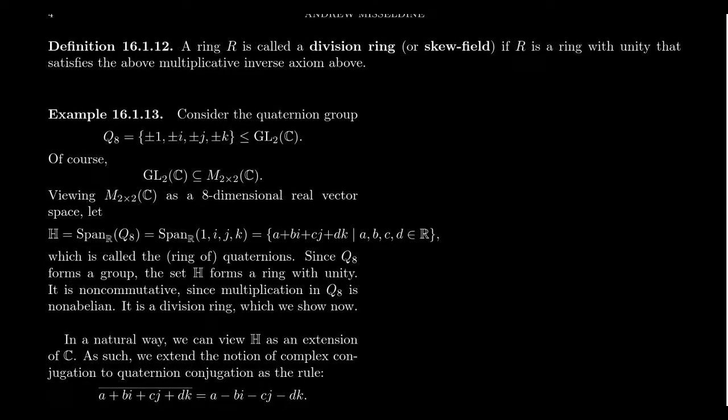The rational numbers, the real numbers, and the complex numbers are all examples of commutative division rings. So it's worth asking: is there an example of a non-commutative skew field? It can be difficult to come up with examples, because you can actually prove that there's no such thing as a non-commutative finite skew field.